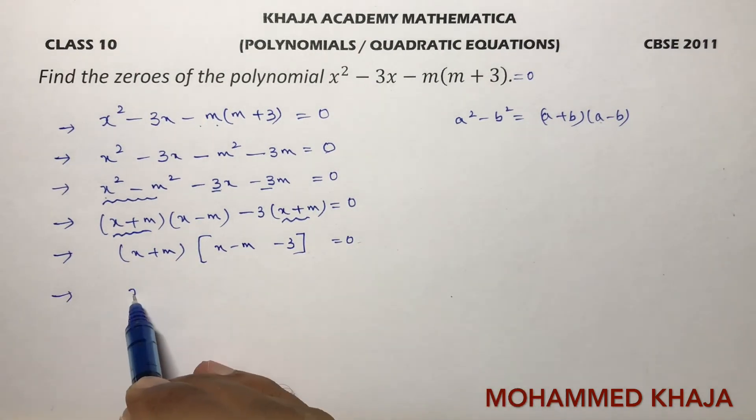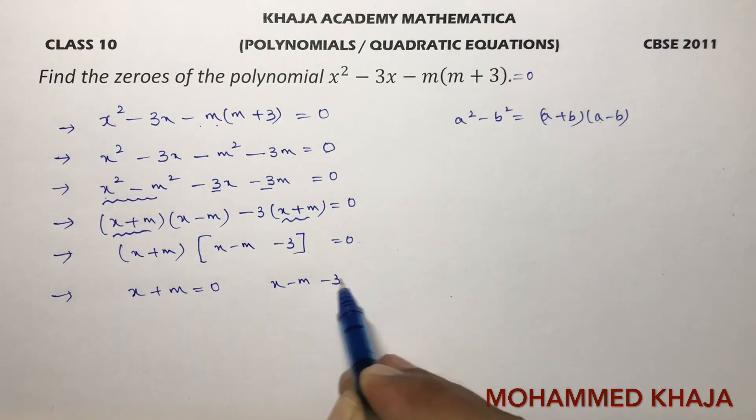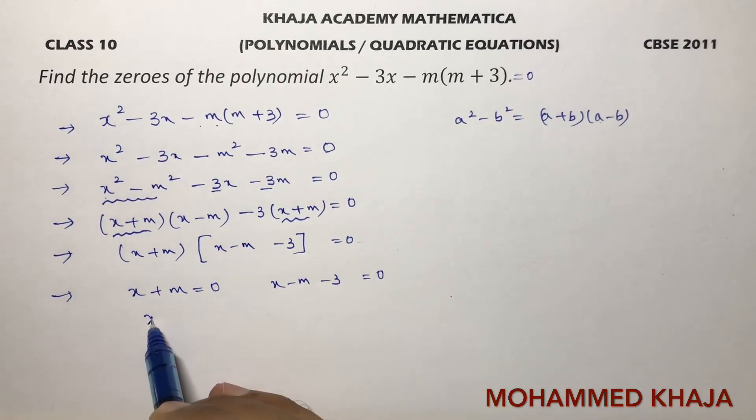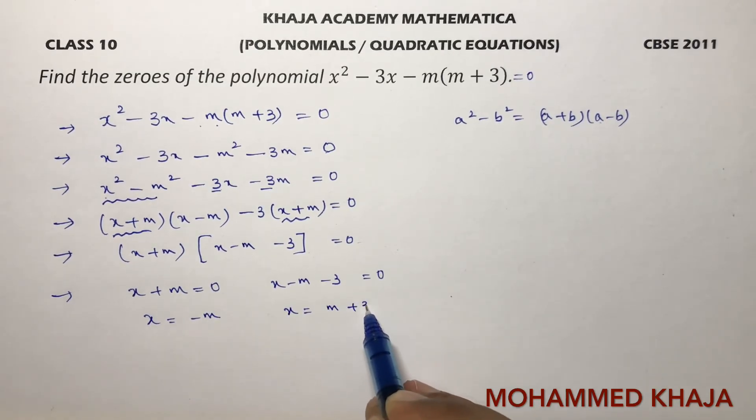So x - m - 3 = 0. So x = -m and x value is m + 3.